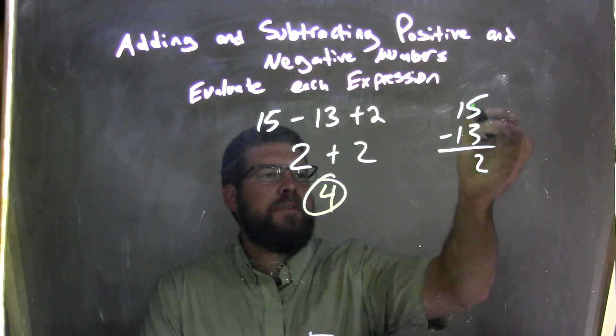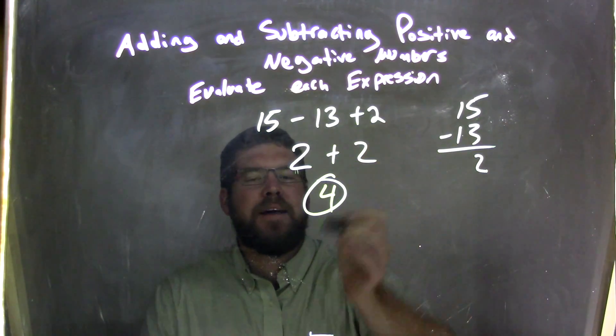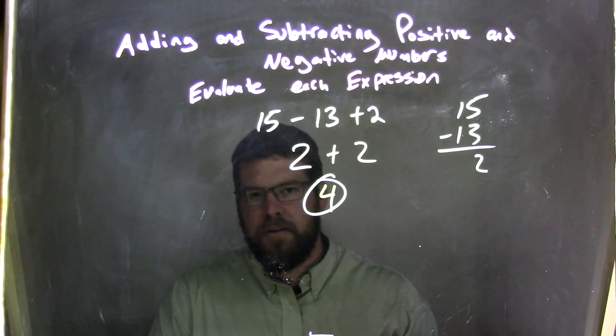15 minus 13 came out to be 2. So 2 is right there, and then 2 plus 2 is 4. And that is our final answer.